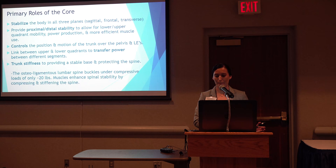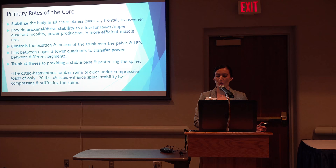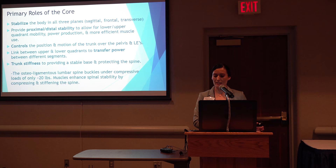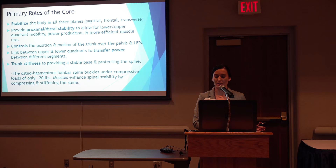So what are the primary roles of the core? The core stabilizes the body in all three planes. It provides proximal stability to allow for lower quadrant mobility and distal stability to allow for upper quadrant mobility. The core controls the position and motion of the trunk over the pelvis and lower extremities, serving as the link between the upper and lower quadrants, allowing for transfer of power. The core muscles create stiffness to stabilize and protect the spine — the osteoligamentous lumbar spine buckles under compressive loads of only about 20 pounds, emphasizing the importance of core musculature in preventing this collapse.